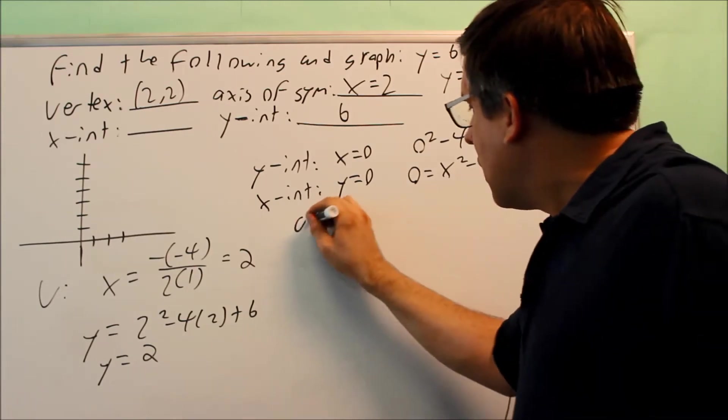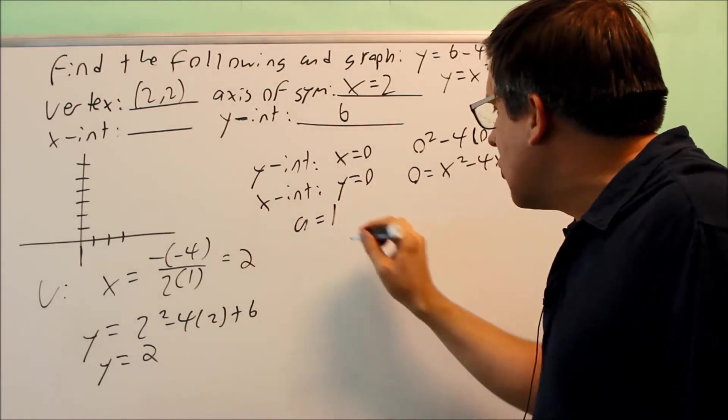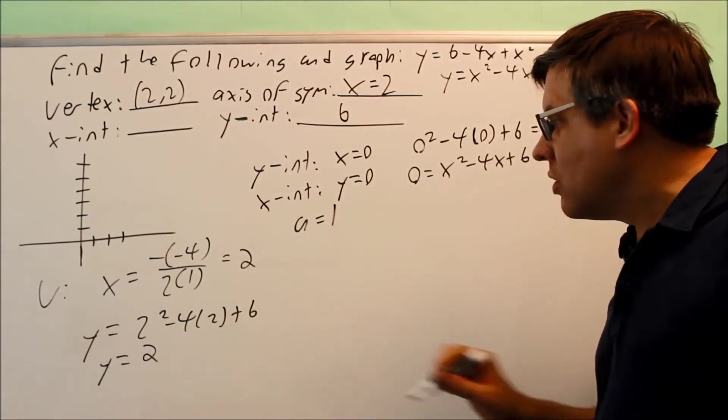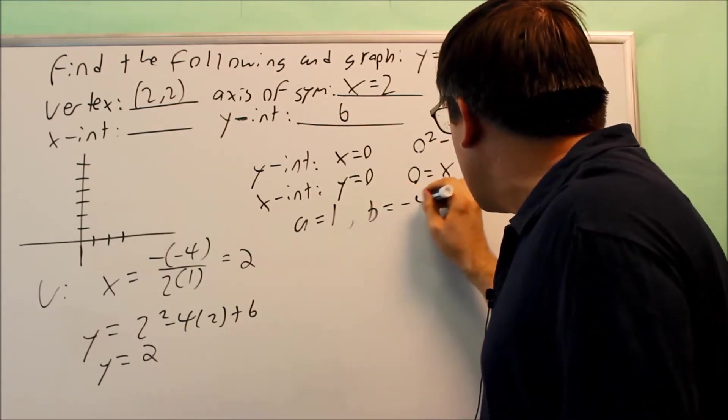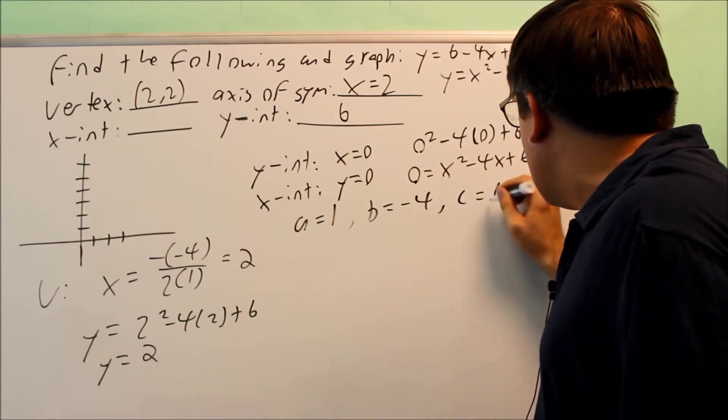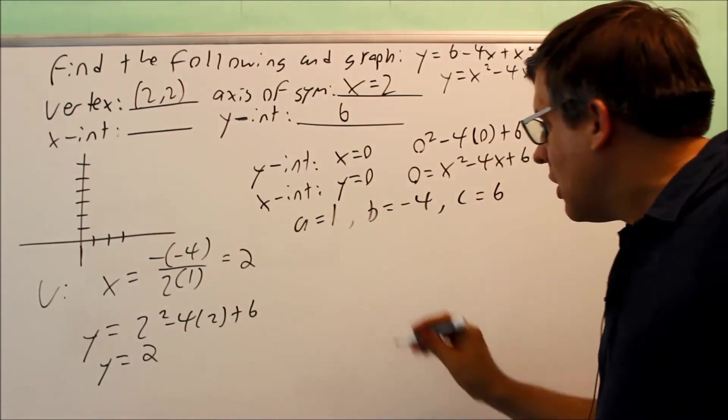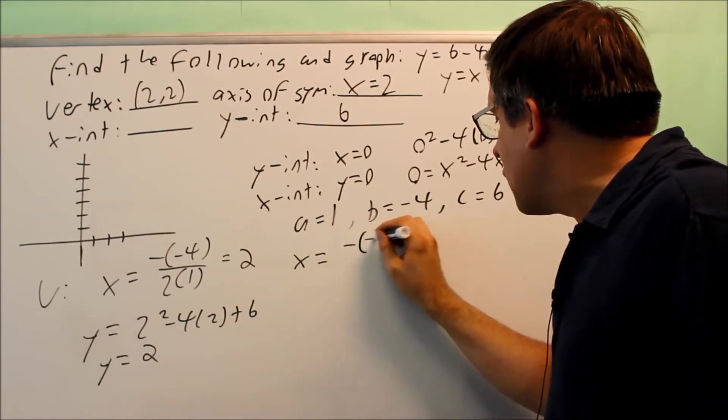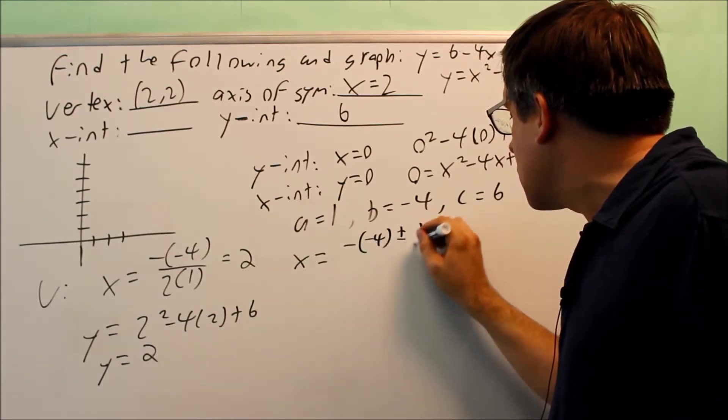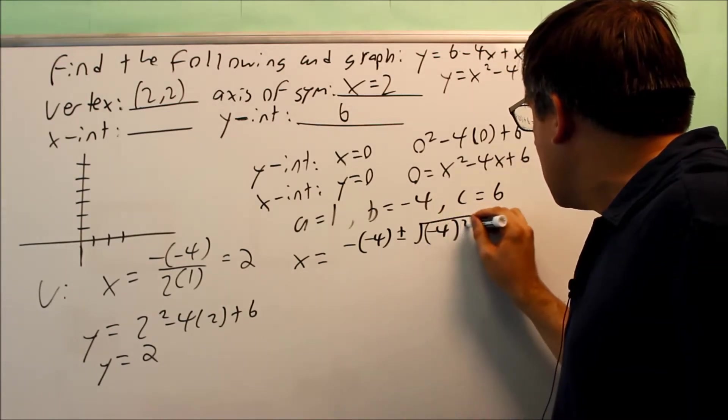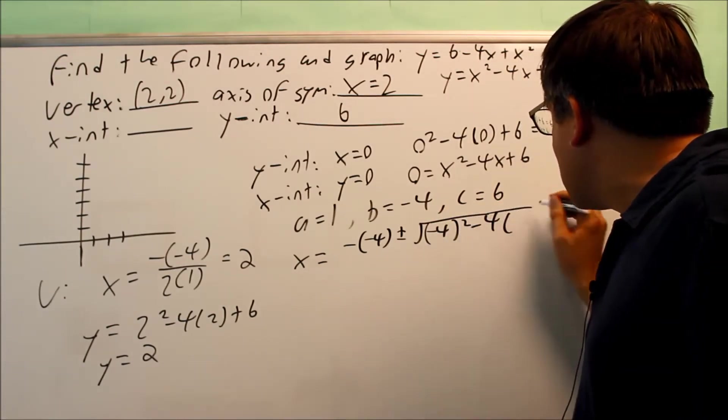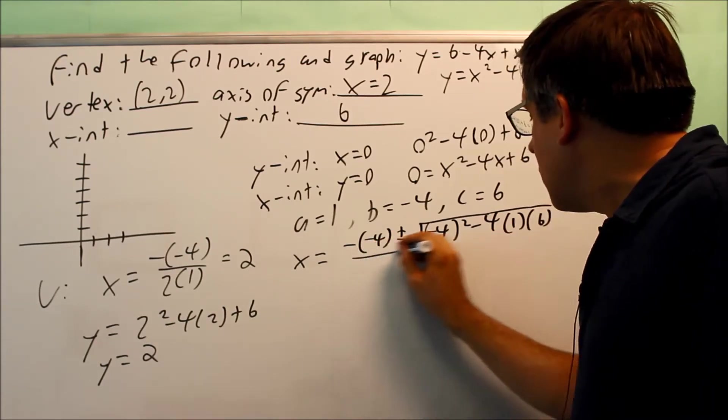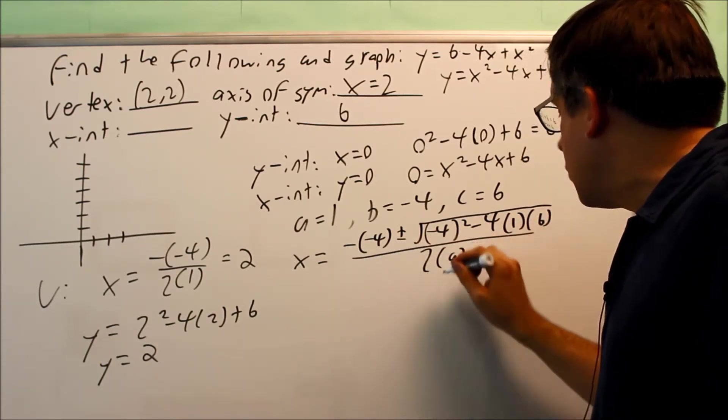So quadratic formula, I want to make sure I know my a, b, and c. So again, it's important to make this in the proper form with the x squared that comes first. I have a is 1, my b is equal to negative 4, and my c is equal to 6. I'm going to put these into the quadratic formula. So I have negative b, negative times negative 4, plus or minus. I have b squared, so negative 4 squared minus 4 times ac. a is 1 and c is 6, all over 2 times a.